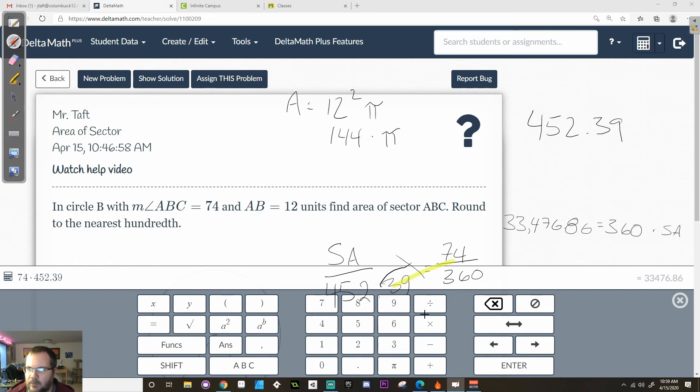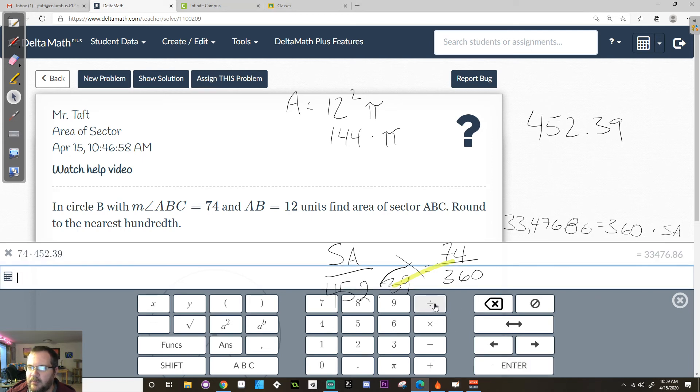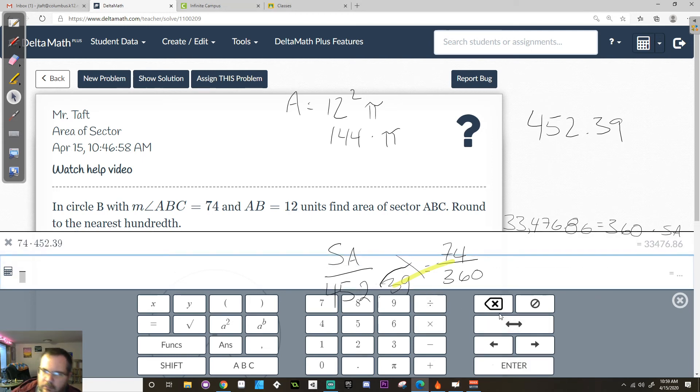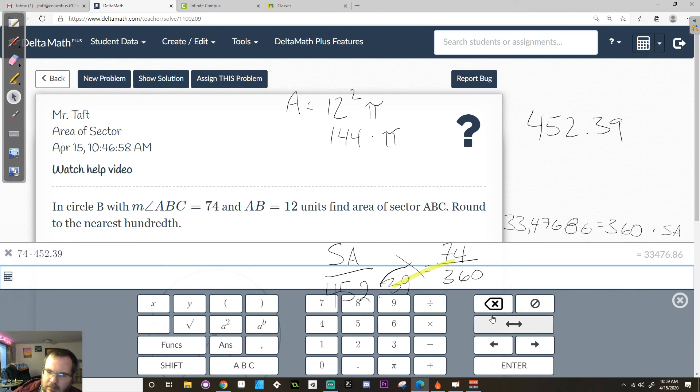That's going to be equal to the other cross product with 360 times the sector area. And then if I do that number divided by 360, so 33,476.6 divided by 360, I get 92.99.